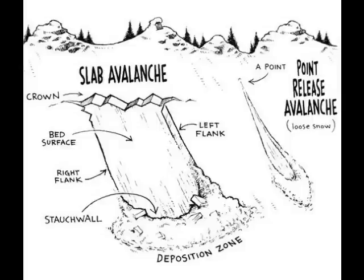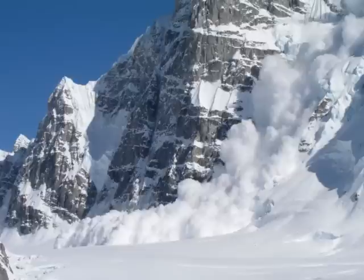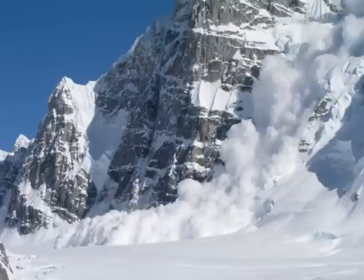Avalanches form when there are weak bonds between the layers of snow. Causes of avalanches include heavy snowfall, rapid change in temperature, slopes between 30 to 45 degrees, skiers, earthquakes, strong winds, and the type of slope — as convex slopes are more likely to cause an avalanche than concave slopes.